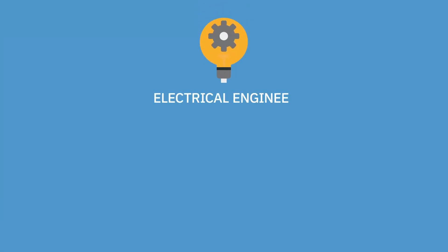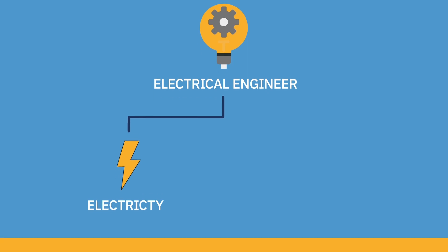Next, electrical engineering. Electrical engineering is the bachelor's degree that I have. There are two types of electrical engineers — two concepts under electrical engineering, to be more specific. One is electricity. Electricity is things that power electronics, things that power anything that has to come alive, such as your television, your computer, or your cell phone.